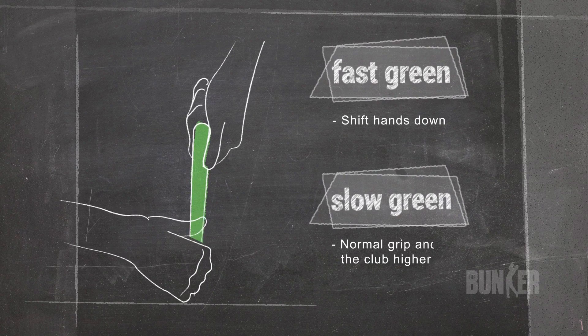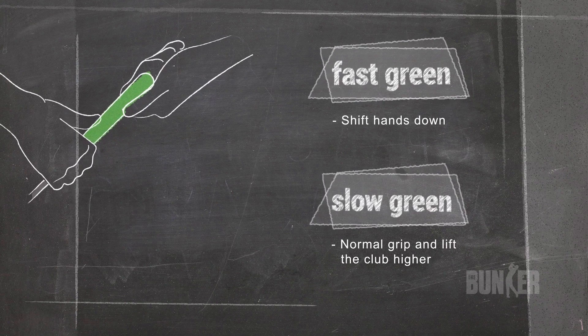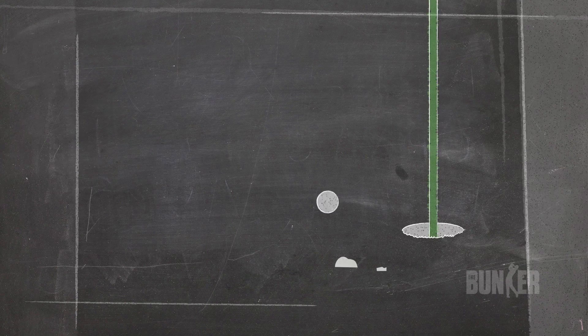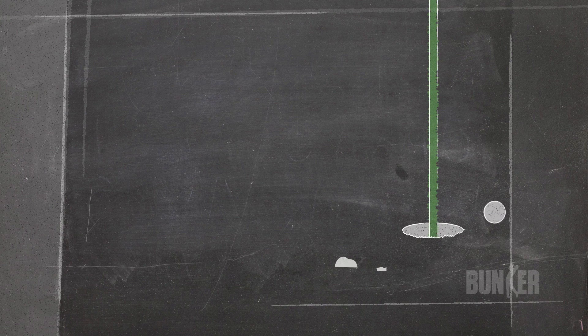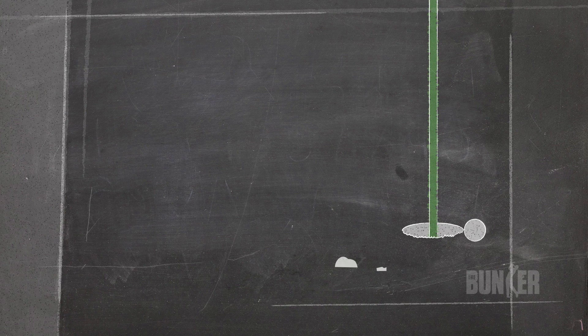If the green feels slow, use your normal grip but lift the club back a little higher. This will lengthen your stroke. By paying more attention to green speed, you'll make your short game even shorter.